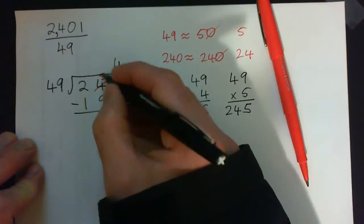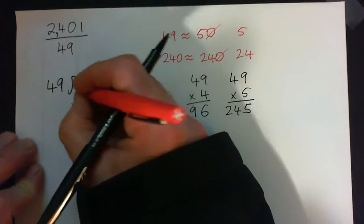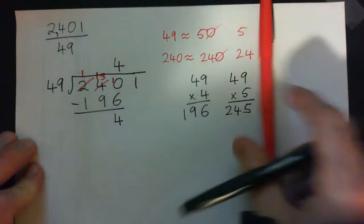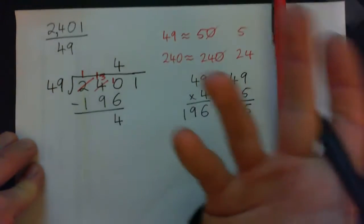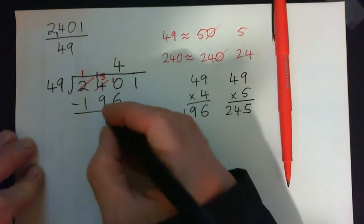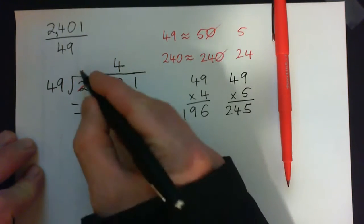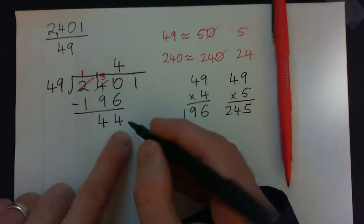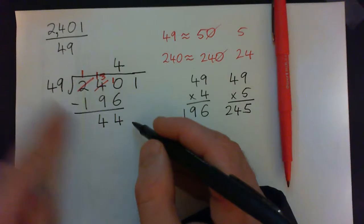And we try to do 3 minus 9, that's not going to work. Got to steal 100 from over here. That 2 becomes a 1, and that 100 comes over here to make 130, or just think of it as 13. 13 tens minus 9 tens gives 4 tens, and then we have 100 minus 100 is 0. So our remainder is 44, and this is less than 49, so we're doing these things correctly.